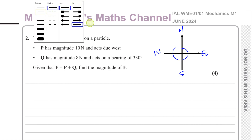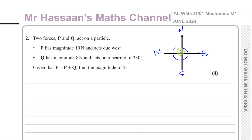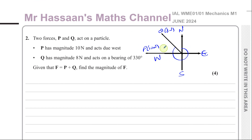So that would be your force Q, and your force P would be acting towards the west. Q would be 8 Newtons and P would be 10 Newtons acting towards the west. This is 270 degrees — 90 plus 90 plus another 90 — and this is 330 degrees. So the difference between them is going to be 60 degrees. That's the angle between those two forces.